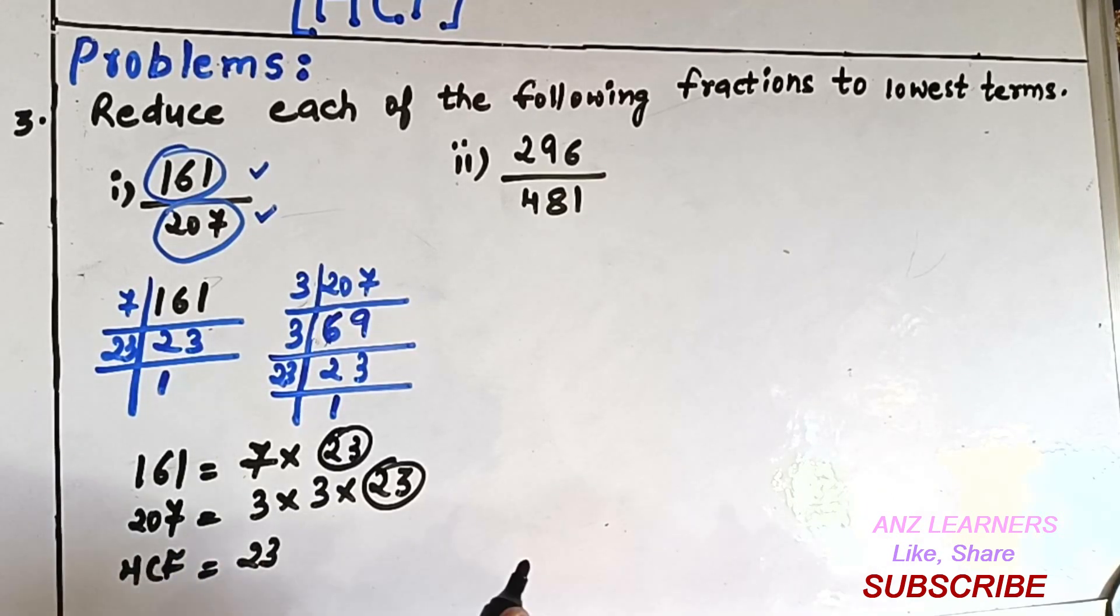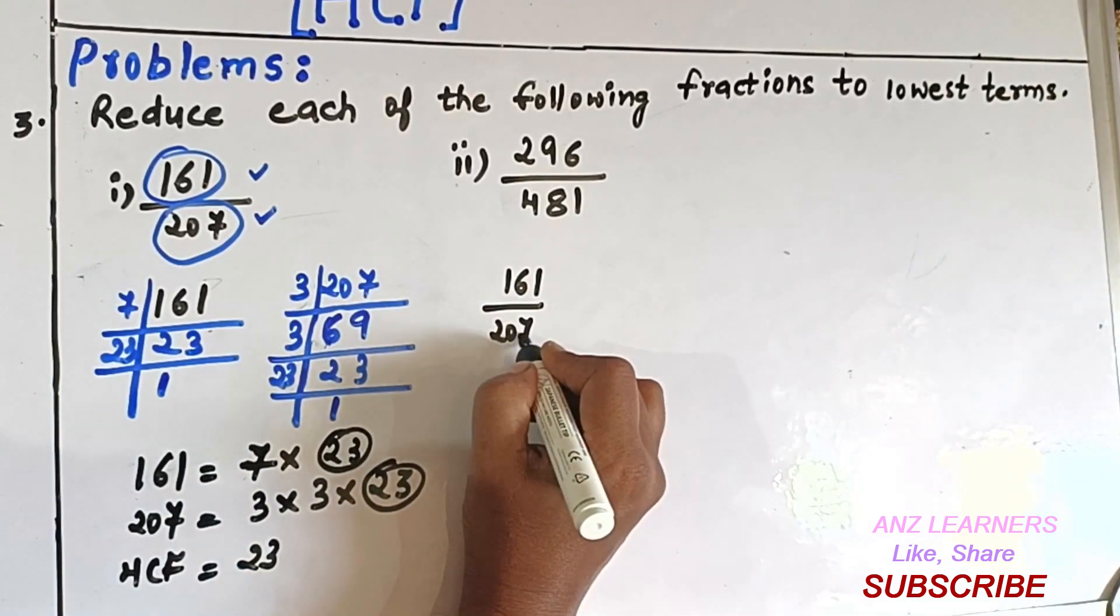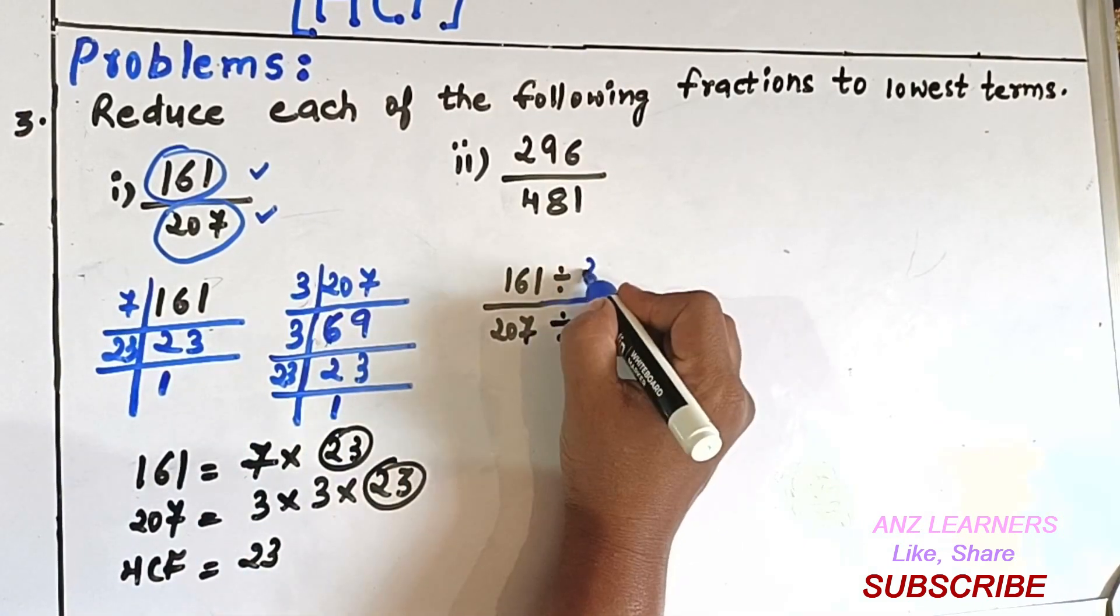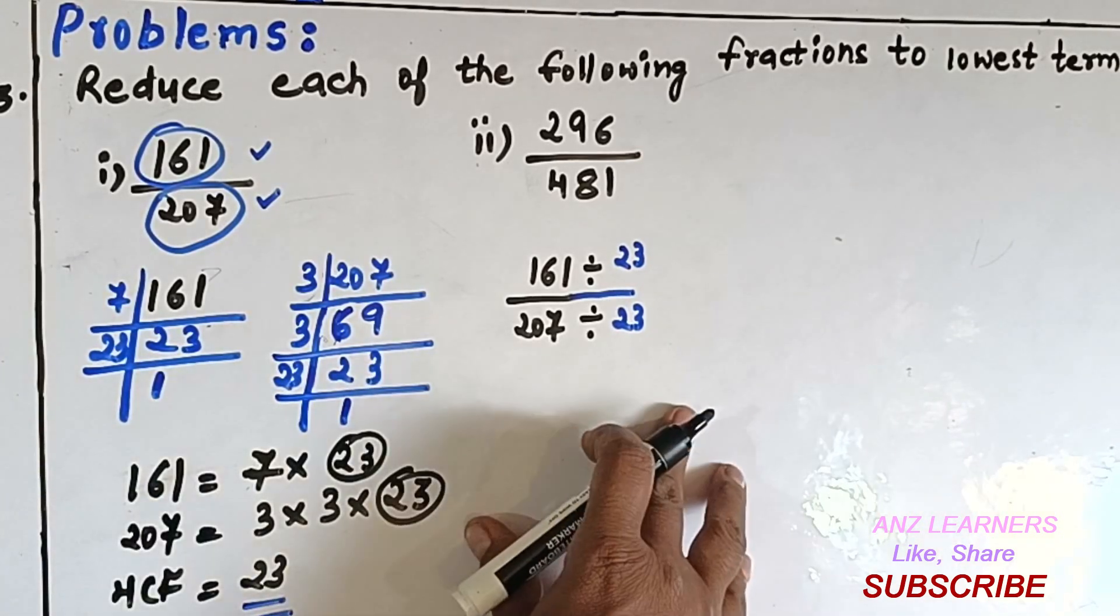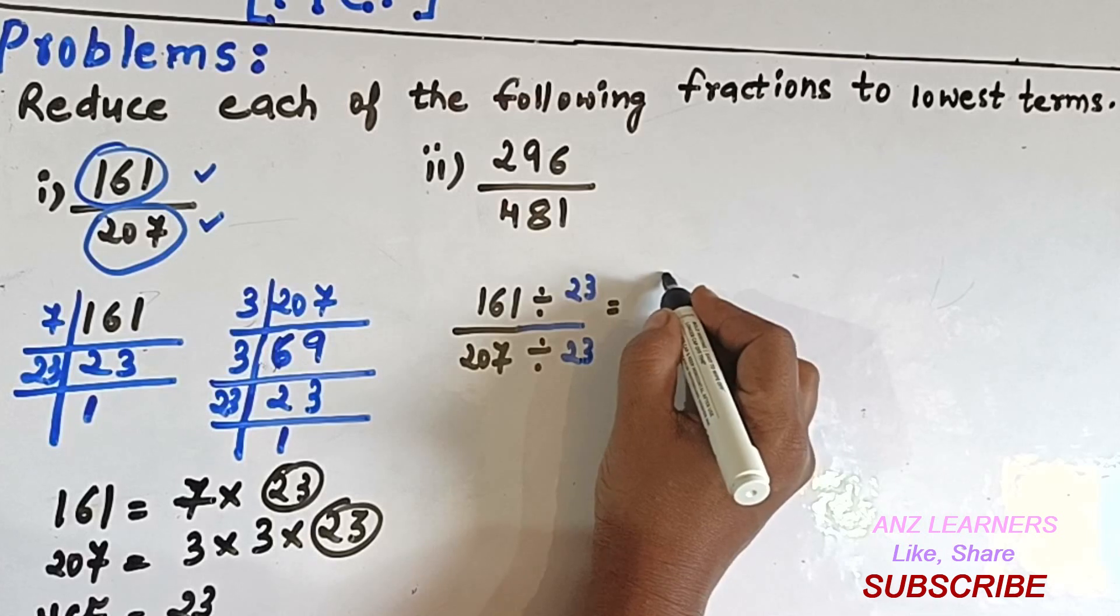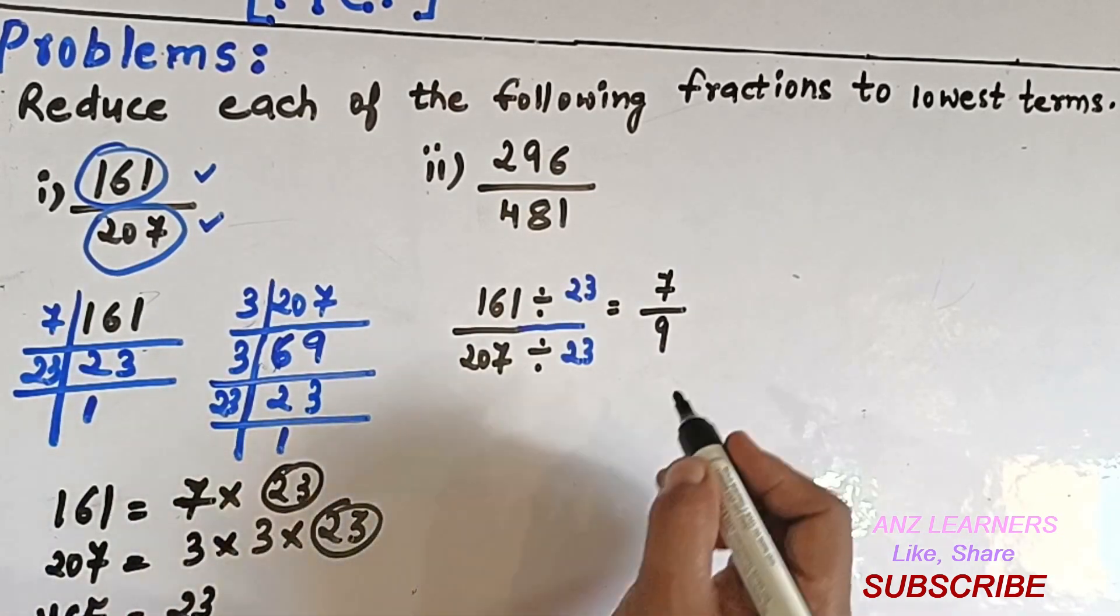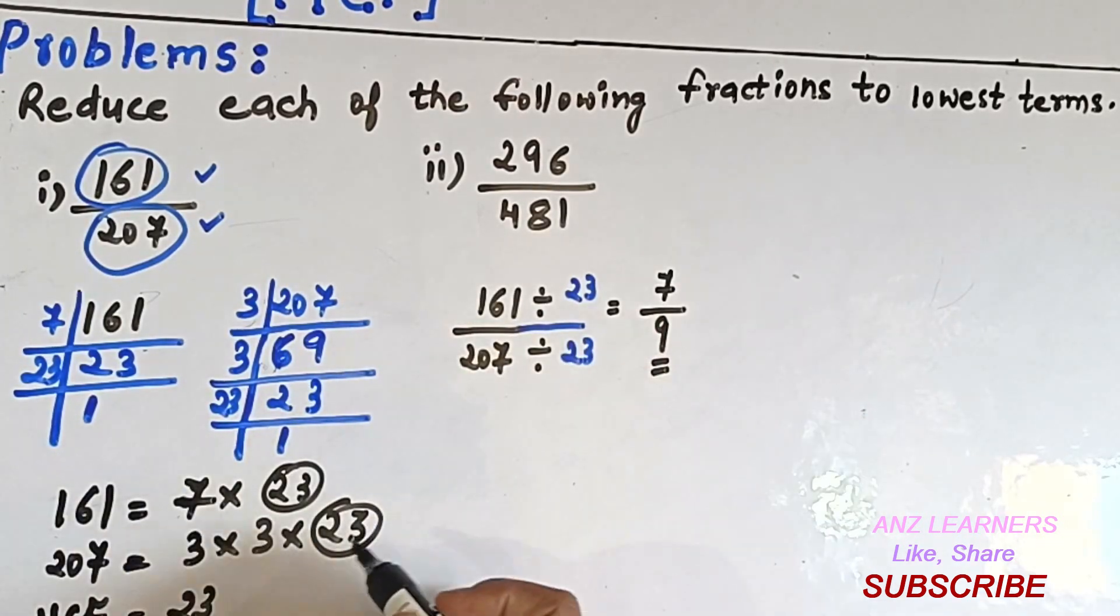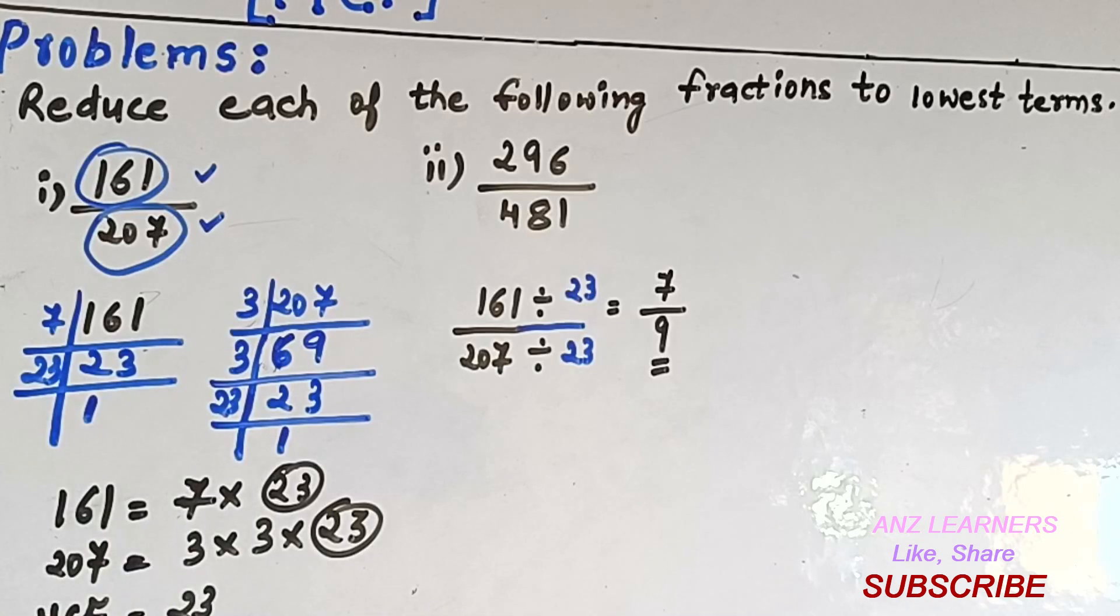So what we have to do after this is divide 161 upon 207 by 23. The highest common factor here is 23. On dividing 161 by 23 and 207 by 23, we will get 7 divided by 9, which are co-primes. After reaching co-primes, it cannot be divided further as they don't have any other factor other than 1.